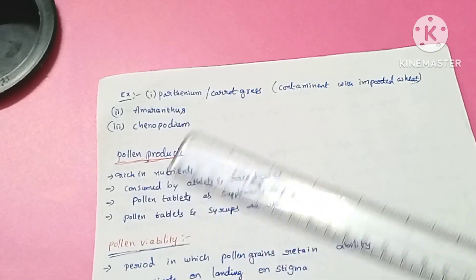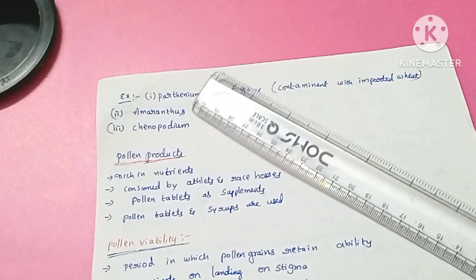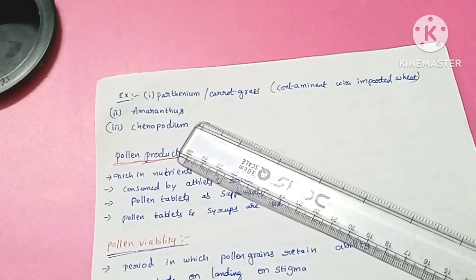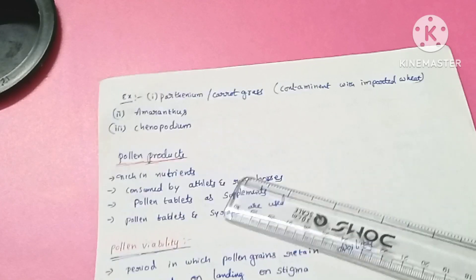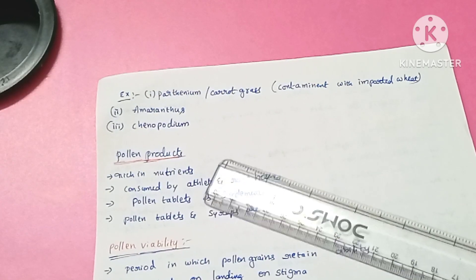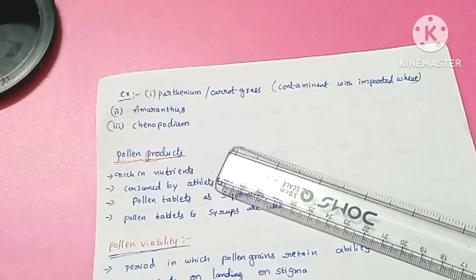So the three main plants that cause pollen allergy are Parthenium, Amaranthus, and Chenopodium. Next we will see about pollen products.